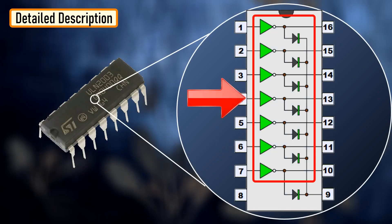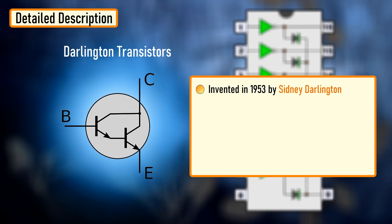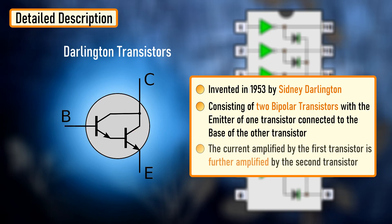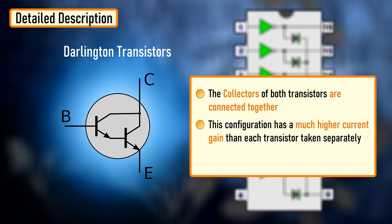Inside the IC is the array of the 7 NPN Darlington transistors. Darlington transistors were first invented in 1953 by Sydney Darlington. A Darlington pair is a circuit consisting of two bipolar transistors with the emitter of one transistor connected to the base of the other transistor. The current amplified by the first transistor is further amplified by the second transistor. The collector of both transistors are connected together. This configuration has a much higher current gain than each transistor taken separately.